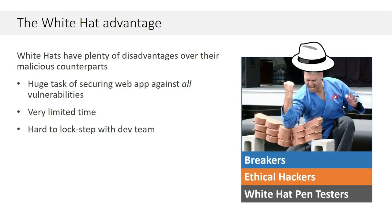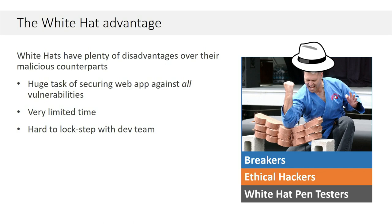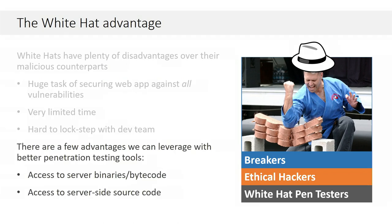White hat penetration testers — also known as ethical hackers or, in OWASP speak, the breakers — go in and try to attack an application. As a pen tester, you have some disadvantages: your job is to find all of the vulnerabilities where a hacker just has to find one. You have limited time compared to what hackers have, and if you're working closely with a development team, it's hard to keep up since they're developing code really rapidly. There are some advantages if you have access to the bytecode or source code, and these tools can help with that.